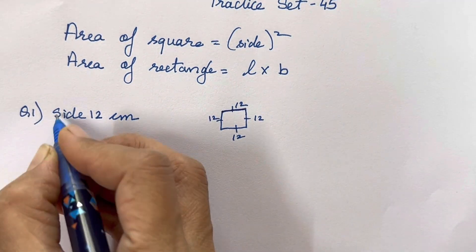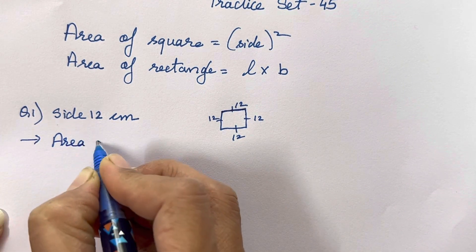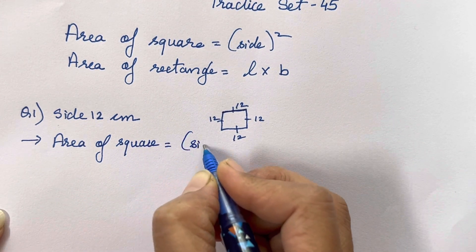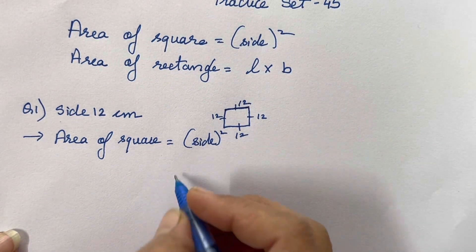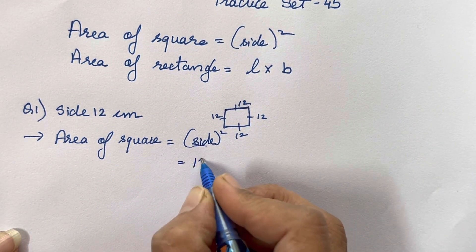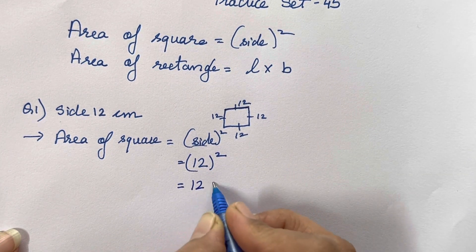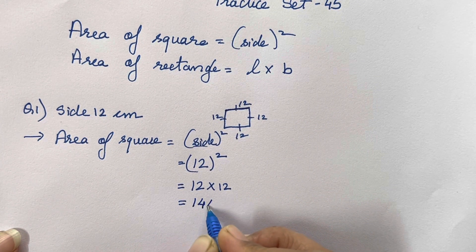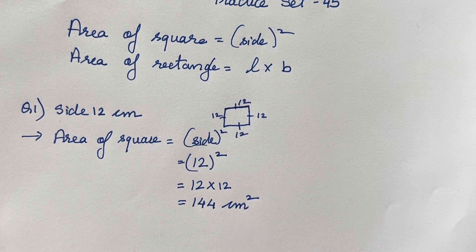So how are you going to solve this? The area of a square is equal to side squared. Side is 12, that means 12 squared. We all know 12 into 12 is 144 centimeter square. That's it — this much only we have to solve.